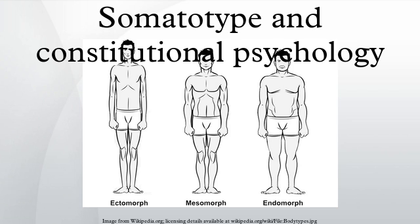Barbara Honeyman Heath, who was Sheldon's main assistant in compiling Atlas of Men, accused him of falsifying the data he used in writing the book. Questions exist about her motivations in making these accusations.